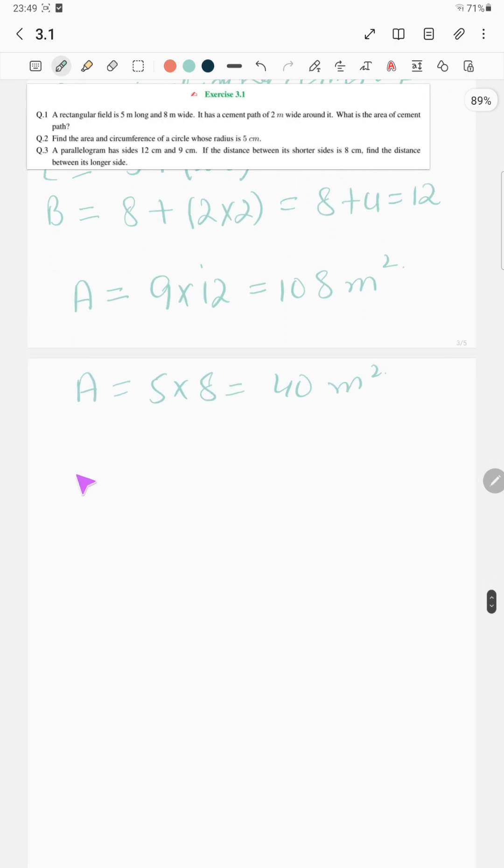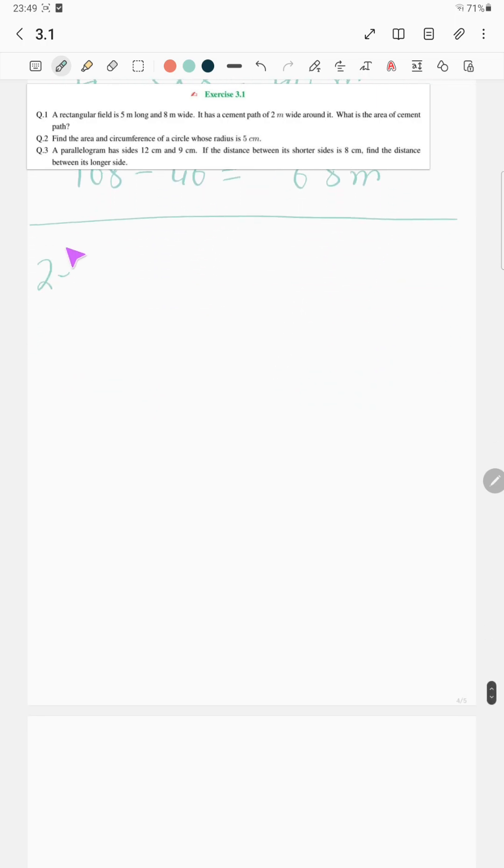So what is the area of the cement path? It would be 108 minus 40, which would be equal to 68 meter square. Question number 2 is: